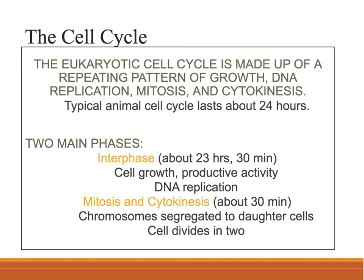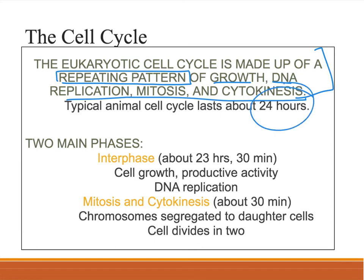The cell cycle — mitosis is part of something called the cell cycle. The eukaryotic cell cycle is a repeating pattern of growing, DNA replication, mitosis, and cytokinesis. Cytokinesis is when the two cells split after mitosis. It lasts about 24 hours. Interphase is the majority of the time — cells are growing and DNA replication is happening. Mitosis itself takes about half an hour; the chromosomes separate and two daughter cells are produced.